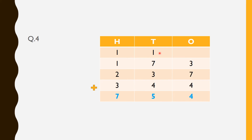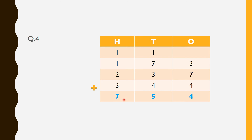Now we will add all the tens together: 1 plus 7 plus 3 plus 4. The answer is 15. 15 tens can also be written as 10 tens plus 5 tens. 10 tens can be written as 100. That 100 we will carry forward to the hundreds place and 5 tens will be written at the tens place. Then we add all the hundreds: 1 plus 1 plus 2 plus 3 equals 7. The final answer is 754.